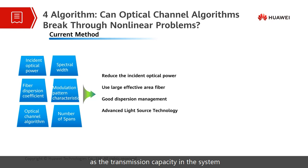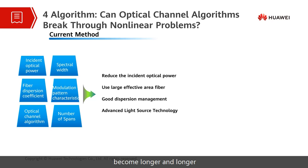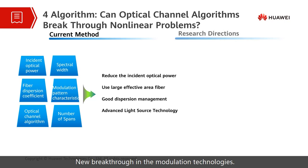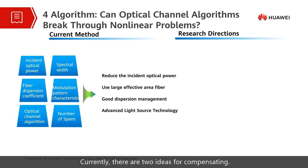However, as the transmission capacity in the system becomes larger and larger, and the transmission distance becomes longer and longer, to overcome the poorer non-linear tolerance caused by the increase of modulation rate, new breakthroughs in modulation technologies and algorithms must be sought. Currently, there are two ideas for compensating the non-linear effect of optical fibers.